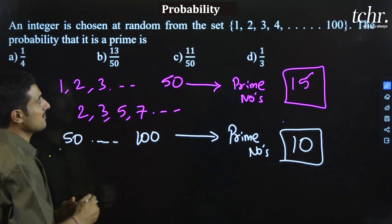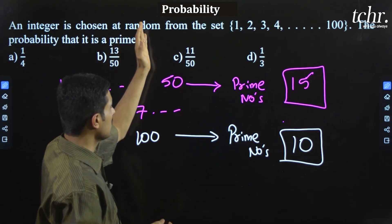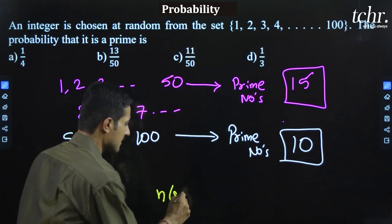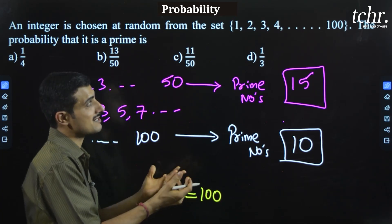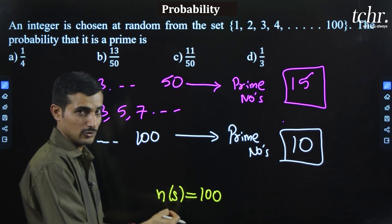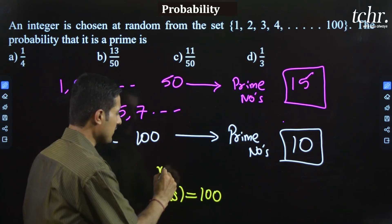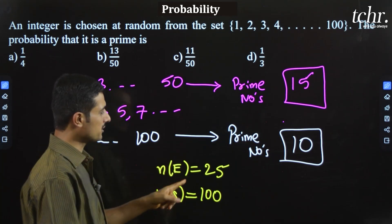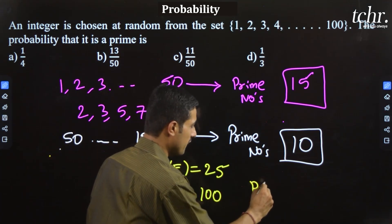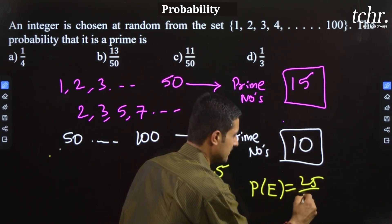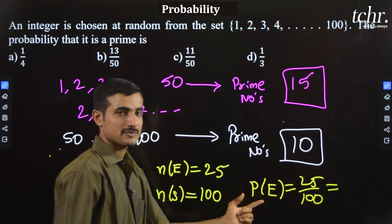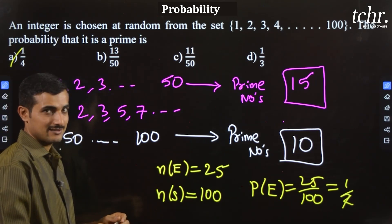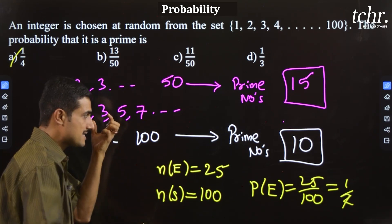For this particular question: an integer is chosen from the set 1 to 100, so n of S is 100. The event E is choosing a prime number, and n of E is 25. Therefore P of E = n of E by n of S = 25 by 100 = 1 by 4. The final answer is option 1/4. Remember this important result about prime numbers.